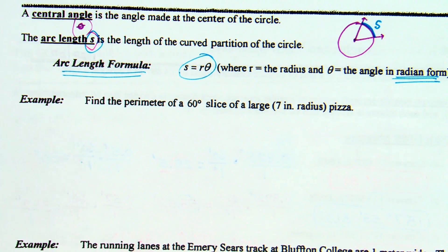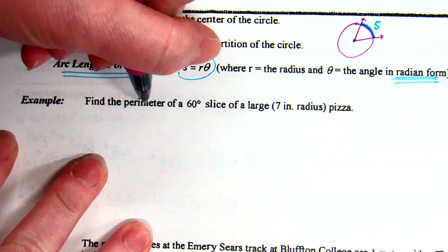R, as always when dealing with circles, is the radius. And theta is the angle. Notice what it says: in radian form. So not in degree form, but in radian form. Our example to use the arc length formula: Find the perimeter of a 60 degree slice of a large 7 inch radius pizza.